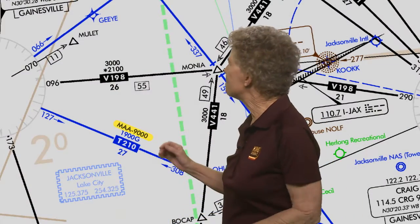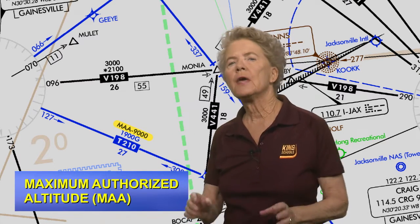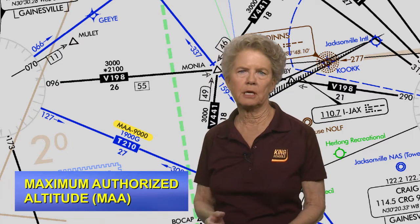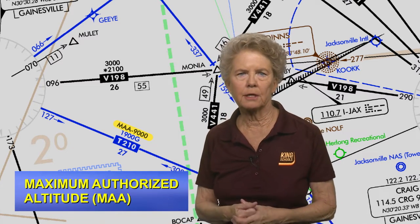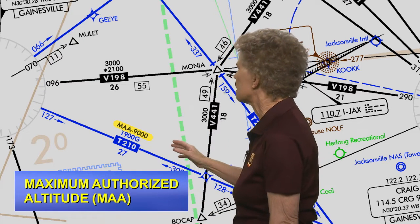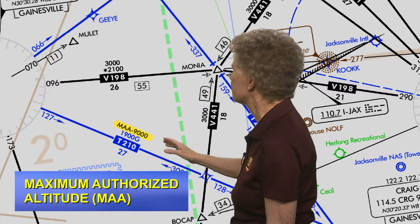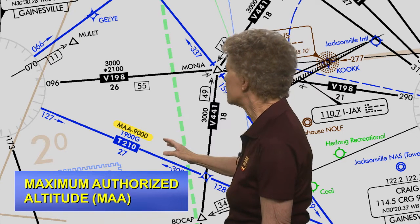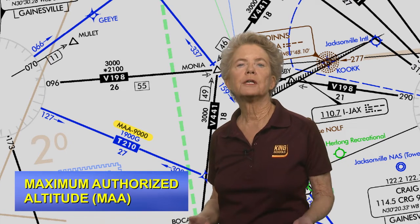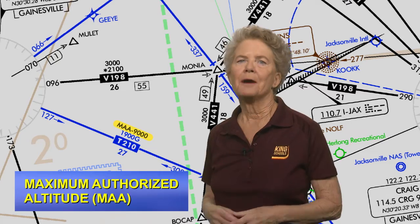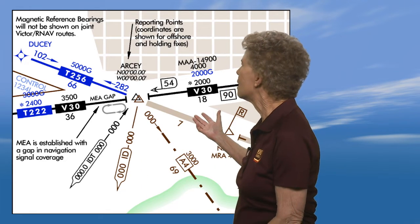Some airways have a maximum authorized altitude — an MAA — as well as minimum altitudes. That's because there may be restrictions such as airspace limitations, traffic conflicts, or technical issues such as frequency interference from other ground-based facilities. Here's an example from a low altitude chart in Florida: on this route segment south of Jacksonville, the maximum authorized altitude on Tango Route 210 is 9,000 feet. MAAs are now much more common due to the flexibility of today's navigation systems and more direct routings. But even though things are changing rapidly, it still is a good thing to know just what those numbers on the airways mean.